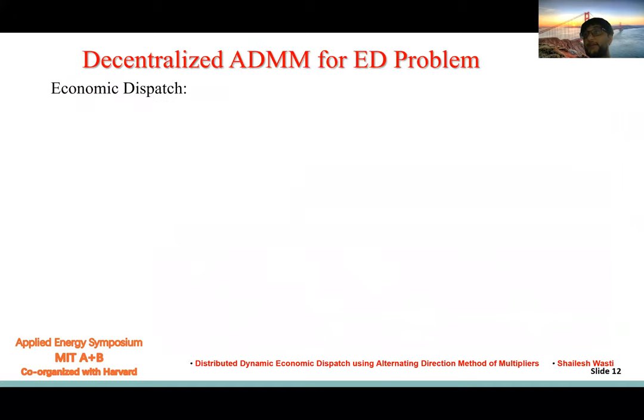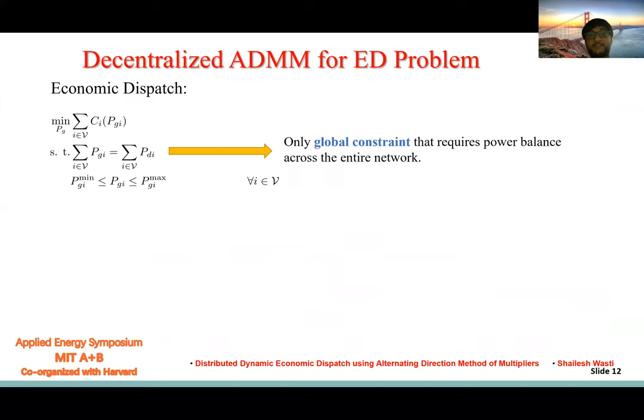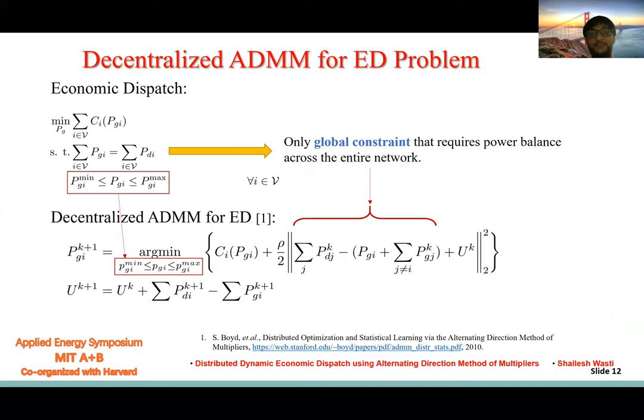Here is the mathematical formulation of economic dispatch. Here we see the global constraint that requires the power balance. When we see this problem, it is inherently decentralized, so any decentralized algorithms will be able to solve it.